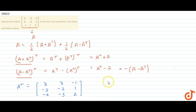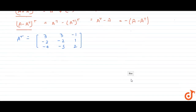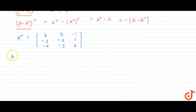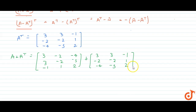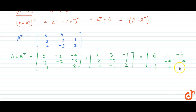Now we need to compute A + Aᵀ. So A plus Aᵀ equals the matrix [3, 3, -1; -2, -2, 1; -4, -5, 2] plus [3, -2, -4; 3, -2, -5; -1, 1, 2], which gives us [6, 1, -5; 1, -4, -4; -5, -4, 4].